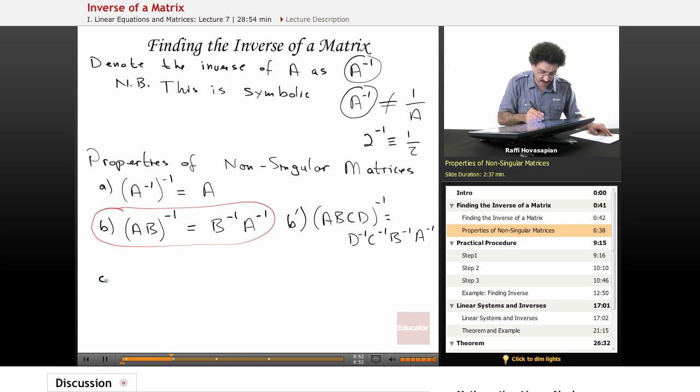And C, our final property: if we take a matrix and take the transpose of it, then take the inverse of it, well, what we can do is just take the inverse first, and then take the transpose. In other words, the transpose and the inverse are switchable. OK, let's see what we can do.